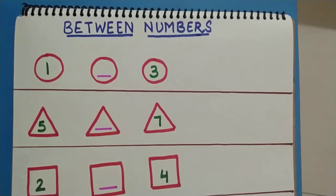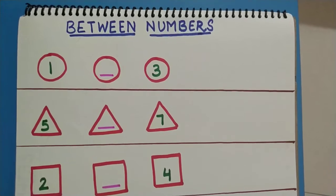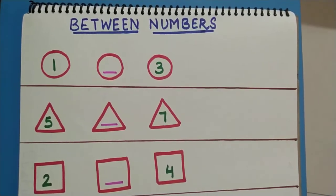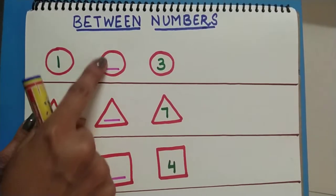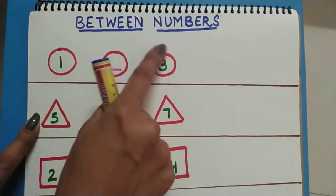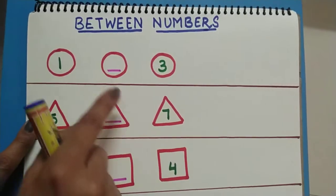Good morning children. Today we are going to learn about between numbers. So first we will see which shape is this. You all are aware which shape is this? Very good. This is a circle.